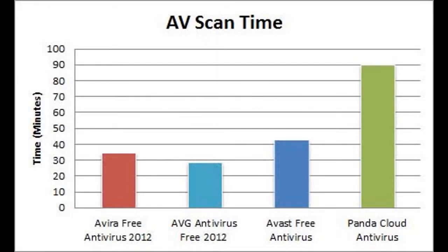Next I wanted to see how fast the software scans the files on my drive. When a virus scanner scans your hard drive, it can use up system resources such as RAM, CPU power, and hard drive read and write rate. All of these resources dedicated to virus scanning can take away from resources that could be put towards other tasks. So the longer it takes to scan your hard drive, the more resources it uses up for the duration of that scan.